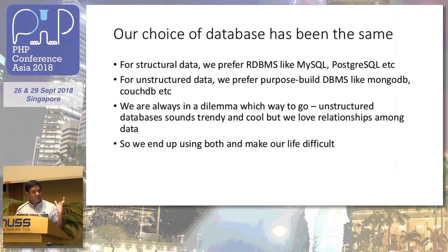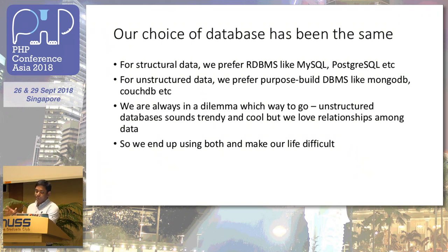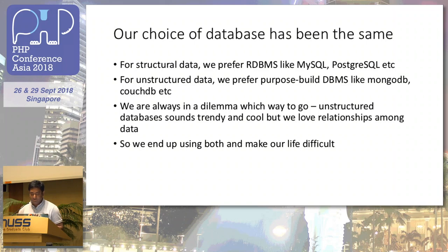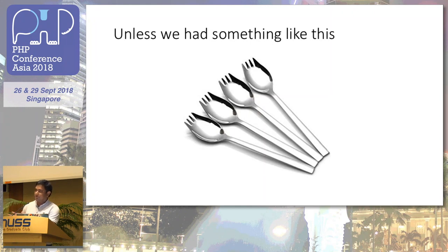For relational data, our long relationship with RDBMS means we can't leave it out. And with modern trends, we try to use MongoDB or similar databases for unstructured data. So in a simple project, we end up using both, which makes our life more difficult — unless we have something like this. It's called a Spork, a combination of spoon and fork. If we could have this in our database, that would be great. And that's what we're going to talk about.